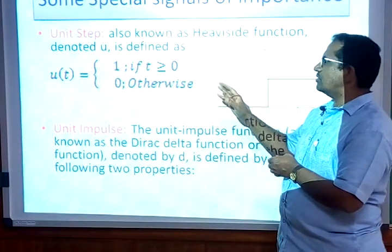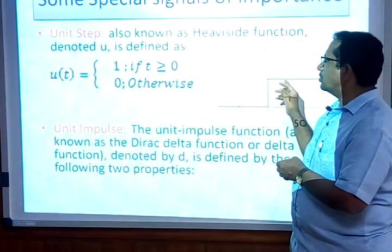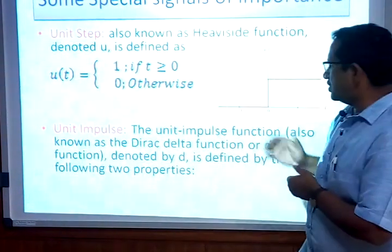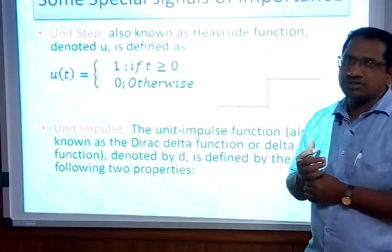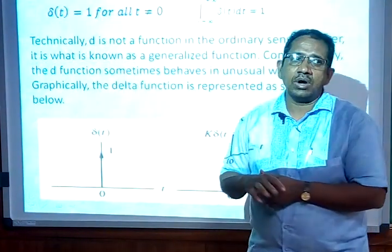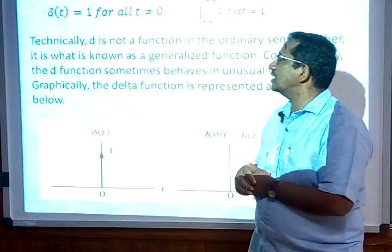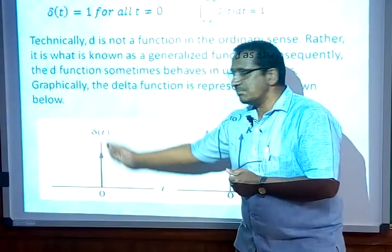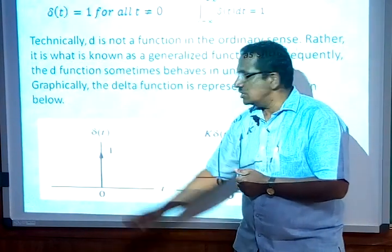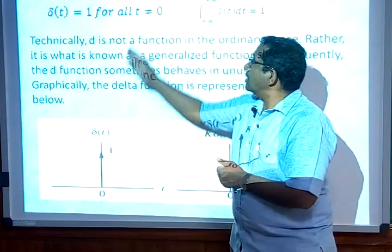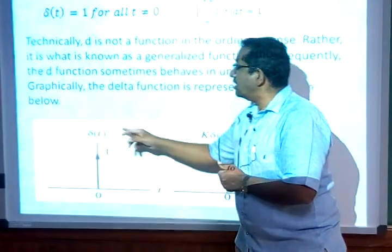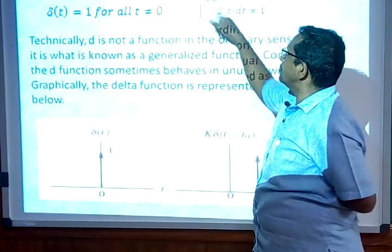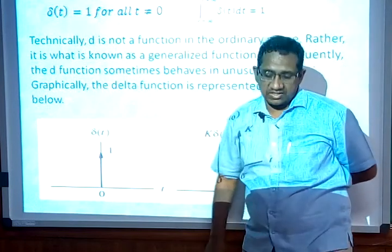The unit step function has values equal to 1 for all t greater than or equal to 0. It is also known as the Heaviside function. The unit impulse function, also known as the Dirac delta function, is denoted by delta of t. This function has value 1 represented by delta of t, and equals 1 at t not equal to 0. When you find the area of the signal over limits minus infinity to plus infinity, you get a value equal to 1, which defines it as an impulse signal.